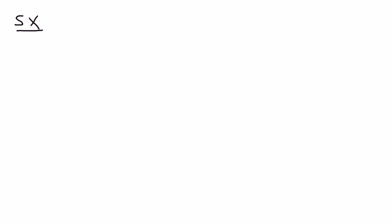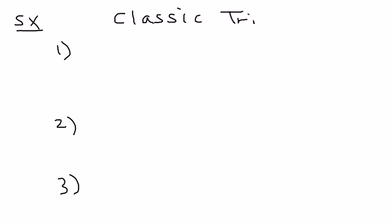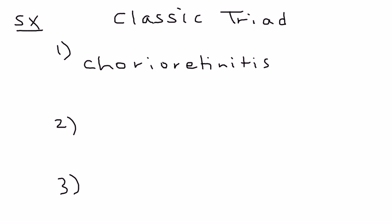The symptoms or presentation of toxoplasmosis in a fetus have a long list, but fortunately there is a classic triad that makes it easier to remember. The first of the three things is chorioretinitis, which is basically an inflammation of the choroid and the retina.